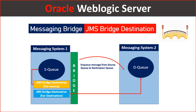The JMS Bridge Destination is a feature used for cross-domain communications, or between JMS and some third-party message providers — for example, JMS in WebLogic and WebSphere MQ. In some previous lectures we discussed the basic components of JMS.